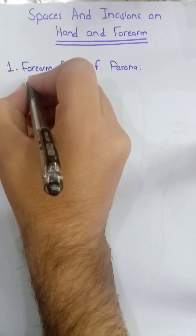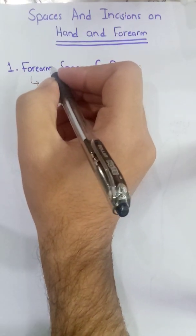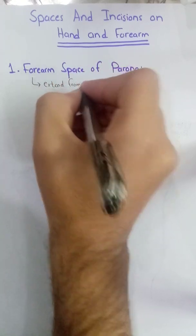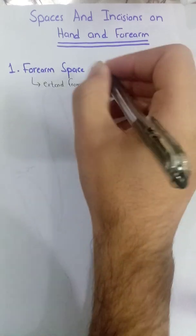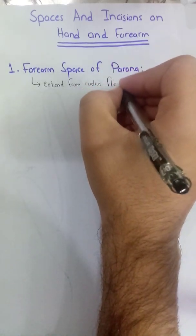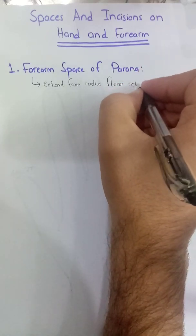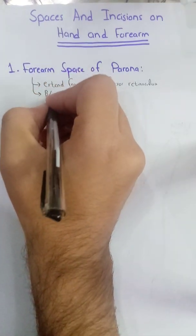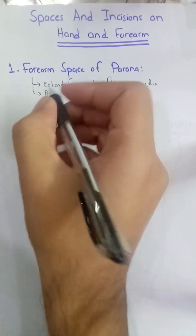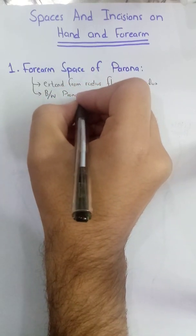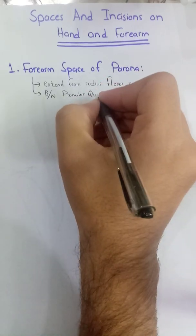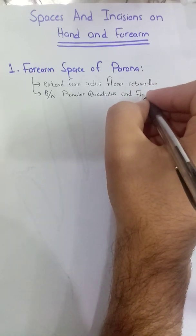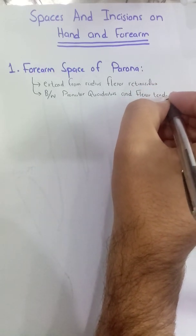The forearm space of Parona extends from the radius bone to the flexor retinaculum, which is at the wrist. This space lies between the pronator quadratus muscle and the flexor tendons.